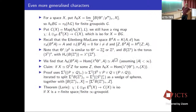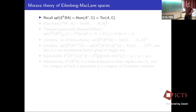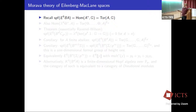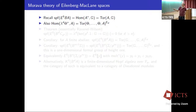We should understand the Morava E-theory of the spaces B^d(A). The formal spectrum of E^0(BA) is Hom(A^*, G). For D = 1, the spf of E^0(BCP_{p^k}) is just the kernel of multiplication by p^k as a self-map of the formal group G. Then taking the D-th exterior power of that — which requires some technical work since we're dealing with group schemes rather than groups, but it can be done — gives the answer for E^0(B^d A).